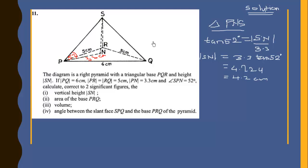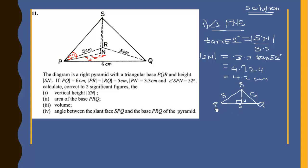Now we find the area of the base triangle PRQ. It is an isosceles triangle with sides 5, 5, and base 6 cm. We find the height of the triangle from R to PQ. The point N divides PQ into two equal parts, so each half is 3 cm.